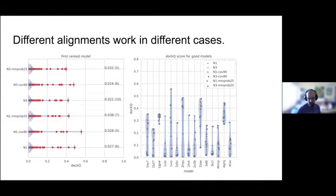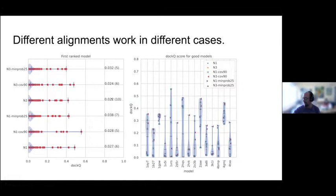We tried varying many alignment parameters: different numbers of iterations, different coverage, different inclusion probabilities. In short, nothing makes a huge difference. Looking at six different methods, the average DockQ score ranges from about 0.2 to 0.4 and the number of good models is between five and ten.